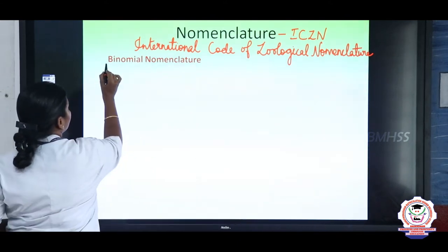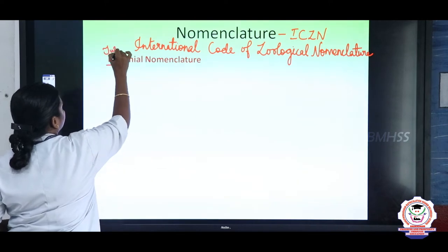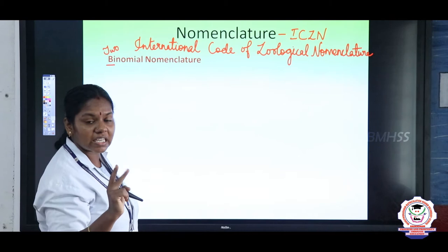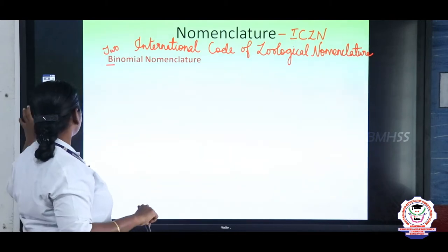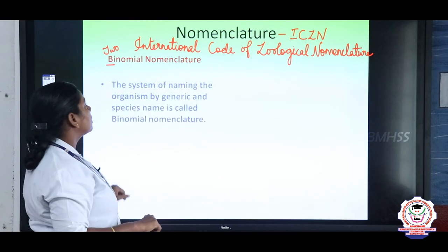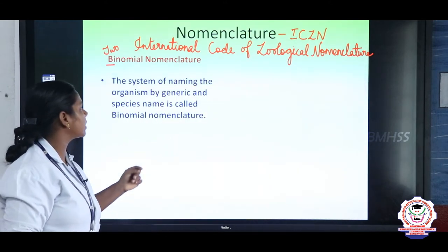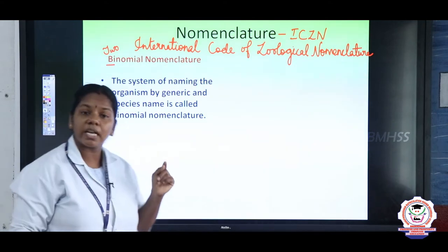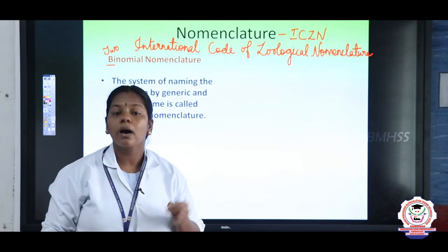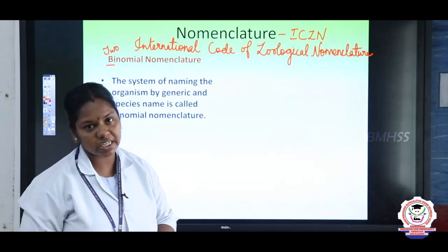Now let us study binomial nomenclature. 'Bi' means two — if an organism is named by two names, we call it binomial nomenclature. It is the system of naming an organism by its generic name and species name. For example, 'Homo sapiens' — 'Homo' is the generic name and 'sapiens' is the species name.